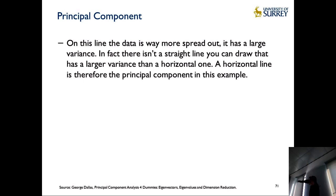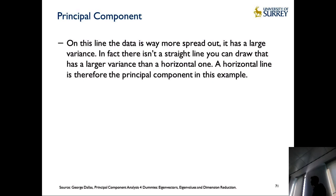The components with high variation seem to be the better representatives. For example, the number of books people read per year may have no correlation with hours spent on the internet — an intuitive example. You can drop principal components where variation across them is not high. Basically, PCA is a dimensionality reduction technique that finds a principal component representation and drops the components with low variation.